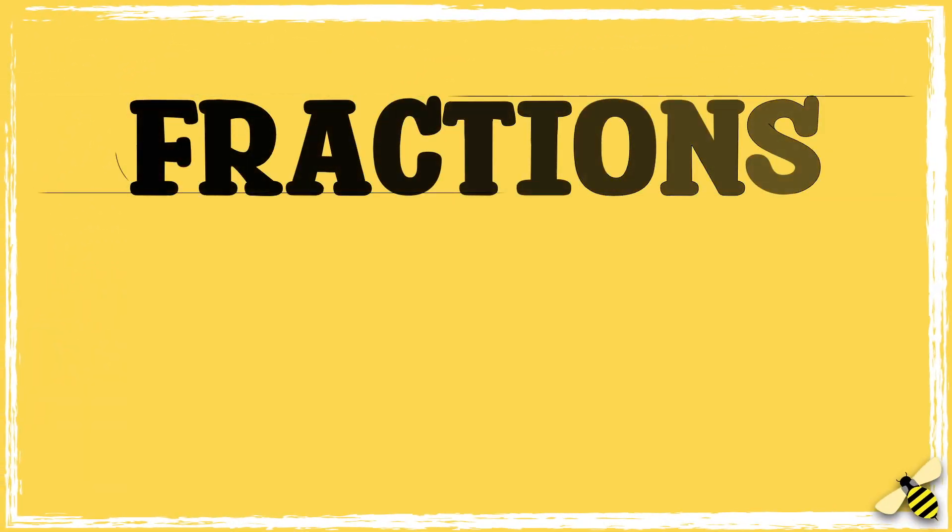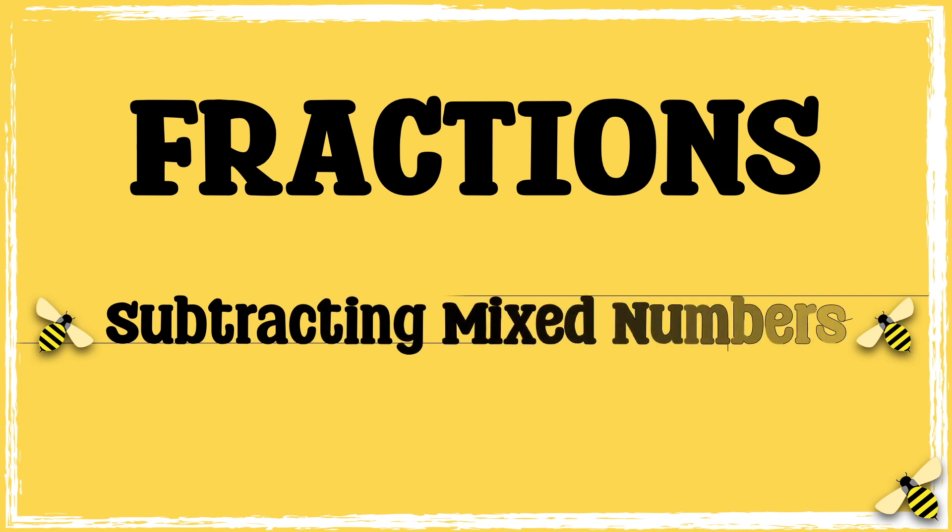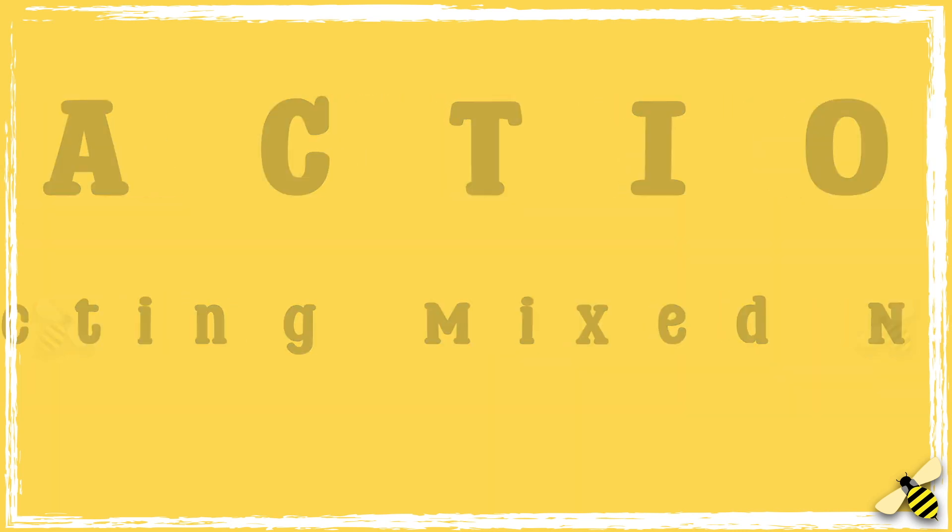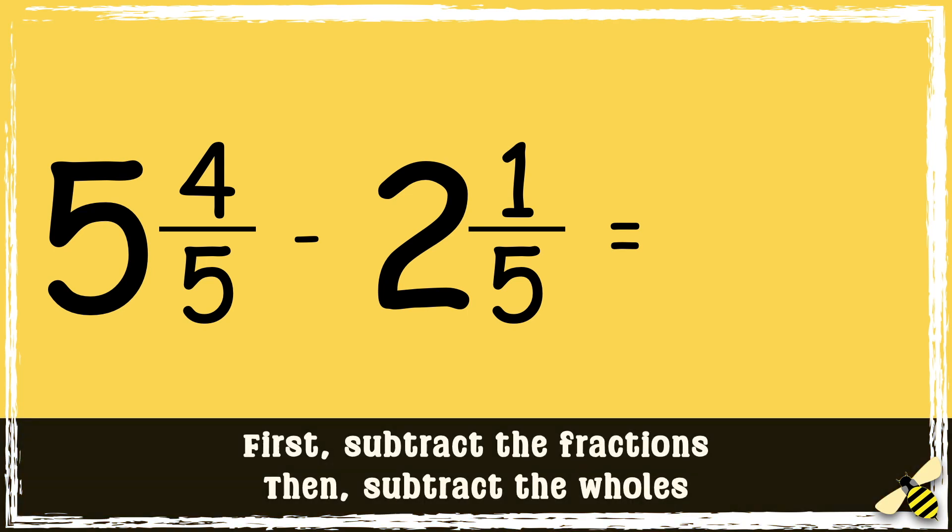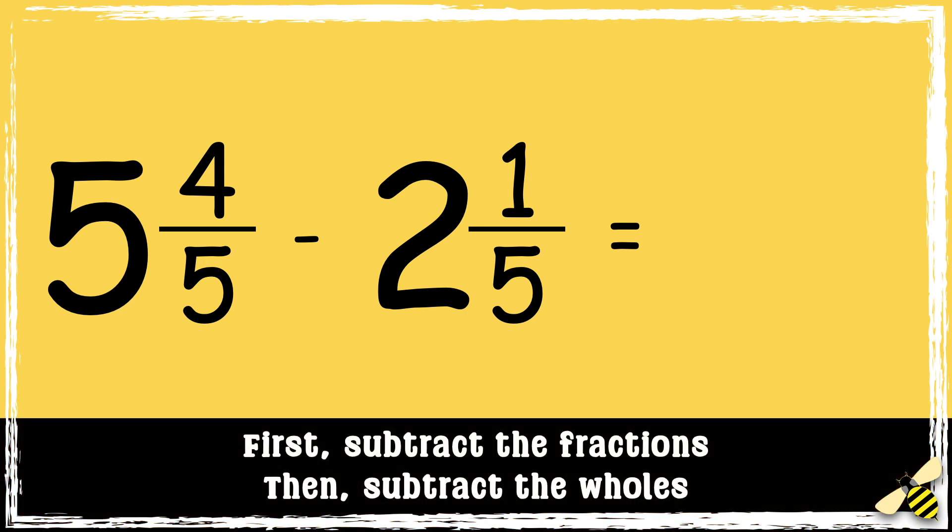In this video, we're going to be subtracting mixed numbers. Here is a calculation. When we subtract mixed numbers, first we subtract the fractions, then we subtract the whole numbers. So first we subtract the fractions: four-fifths take away one-fifth equals three-fifths.